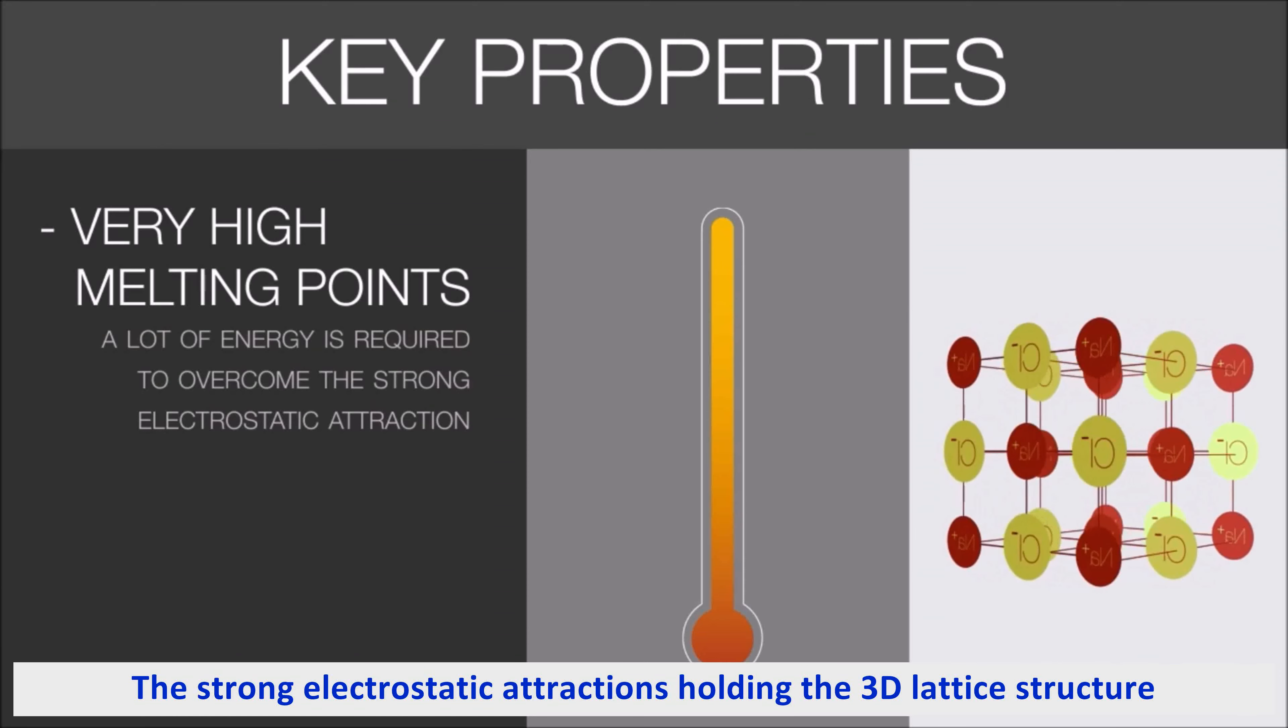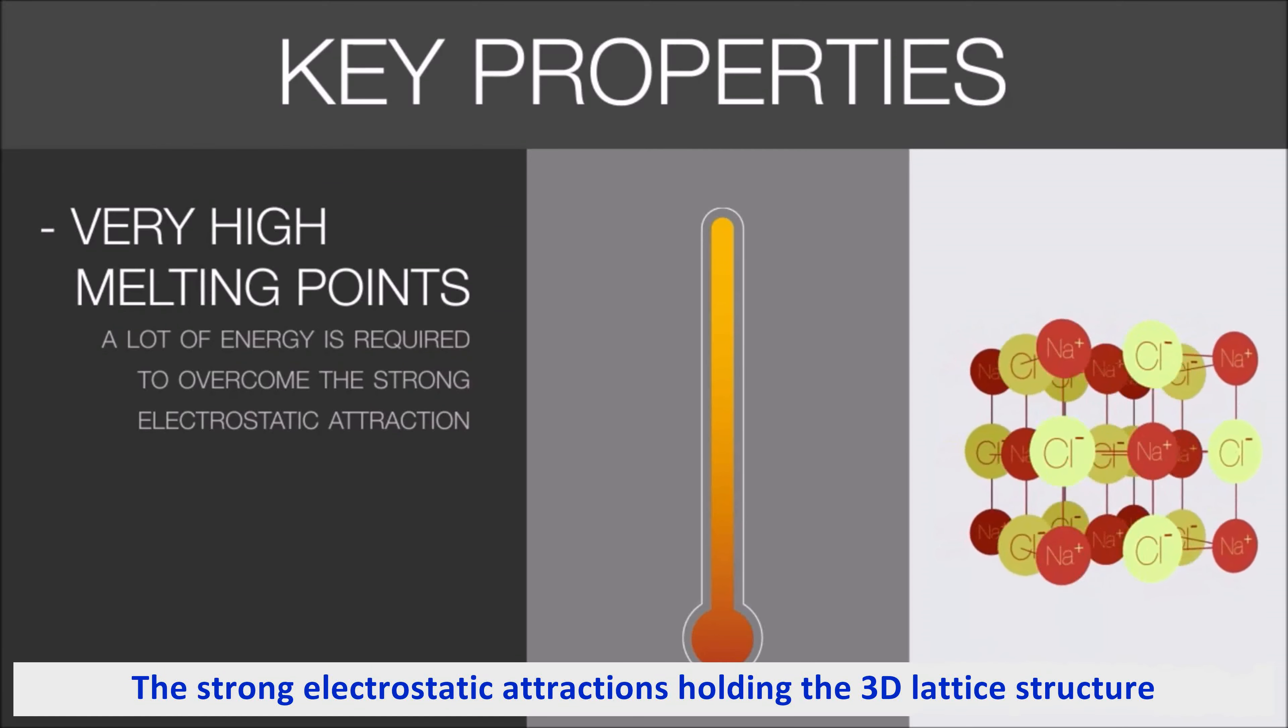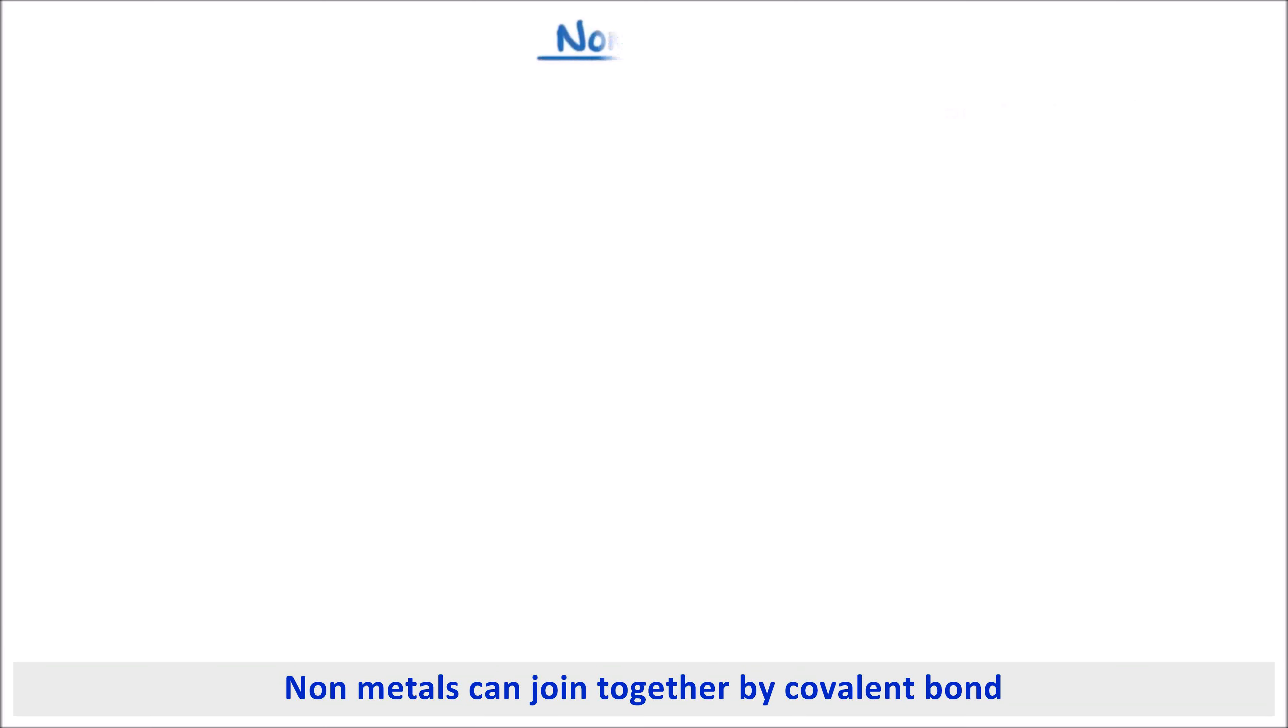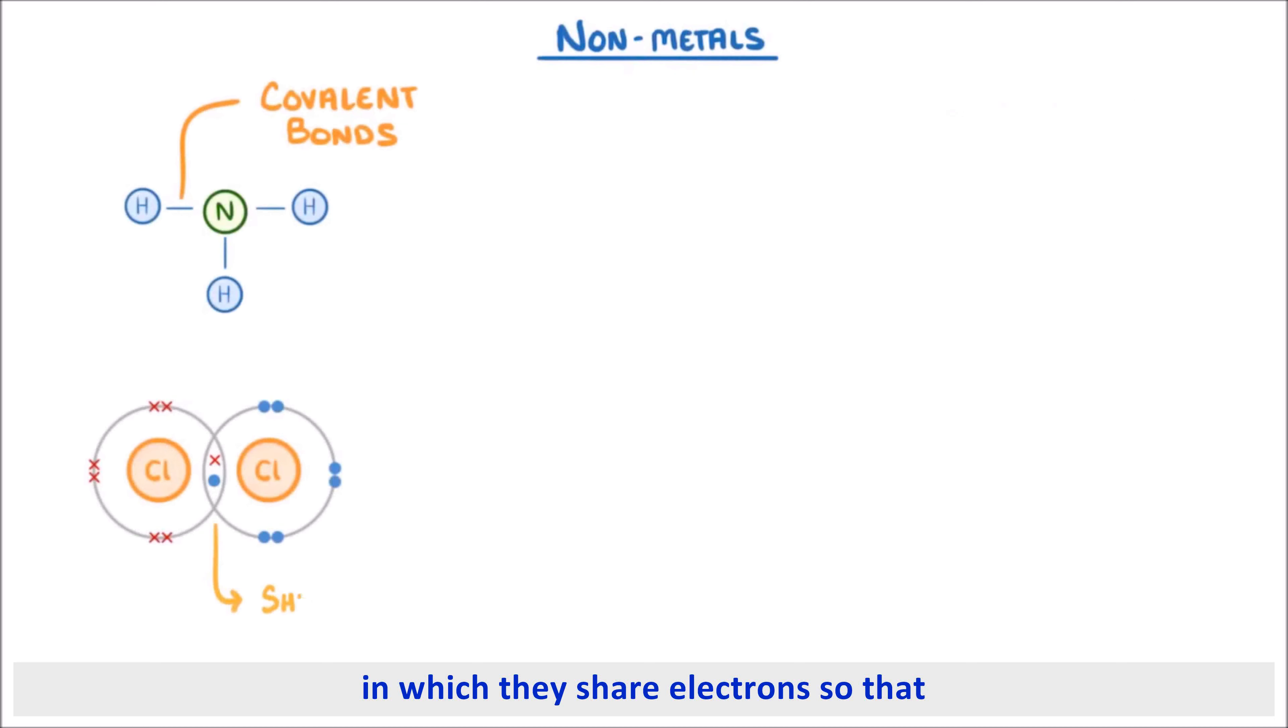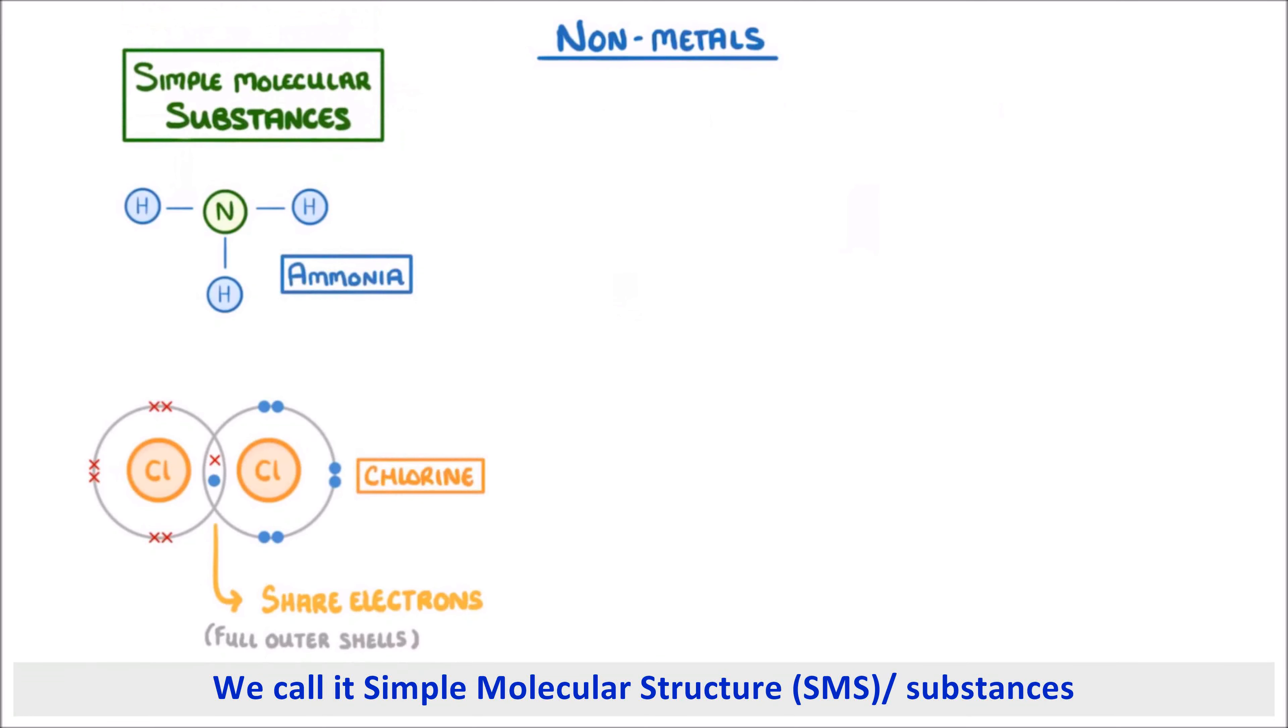Nonmetals can join together by covalent bonds, in which they share electrons so that all of the atoms have full outer shells. Sometimes this results in small molecules, such as chlorine or ammonia, and we call these simple molecular substances.